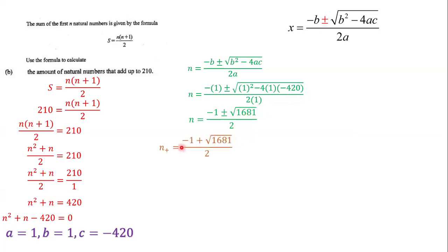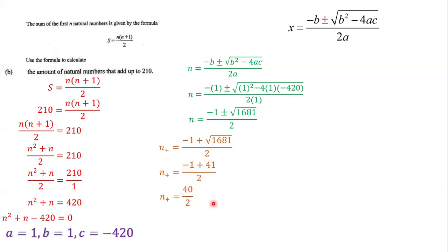First we find n positive by using the plus sign. The square root of 1681 is 41, so n positive = (−1 + 41) / 2 = 40 / 2 = 20. So n positive is equal to 20.